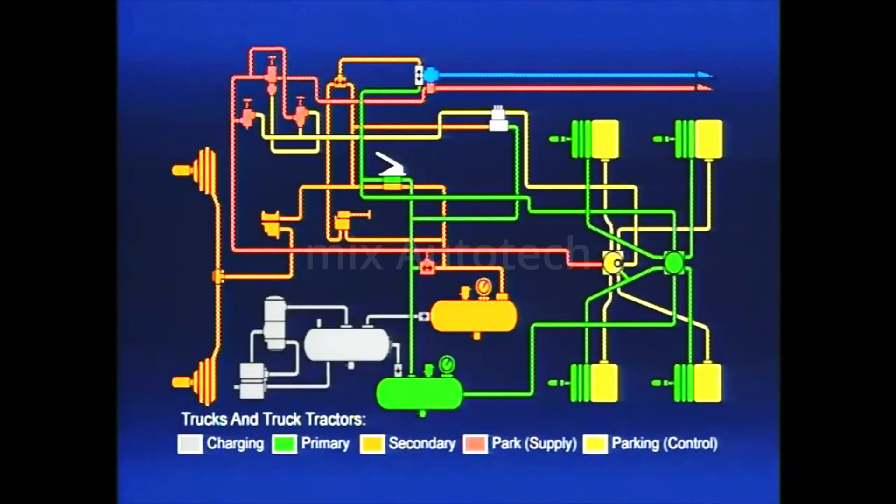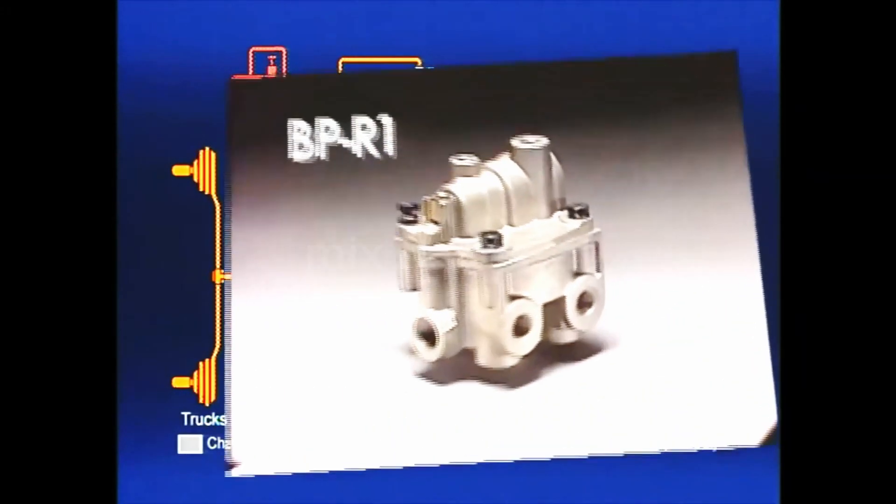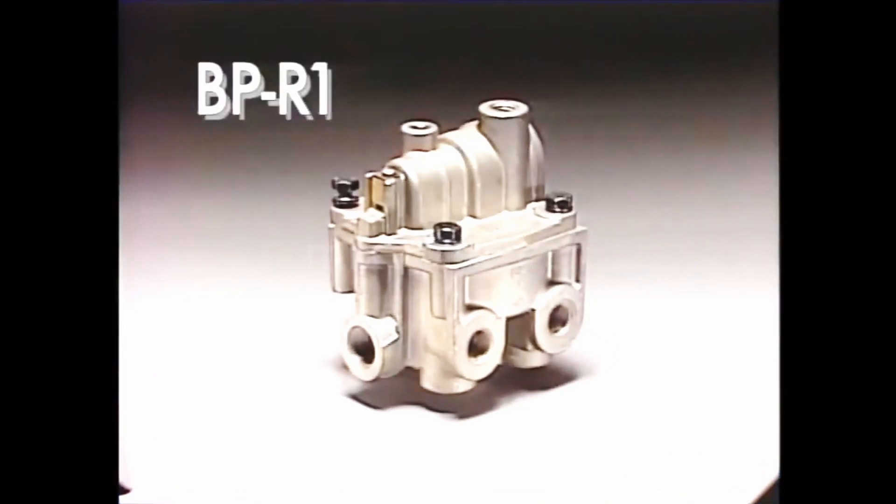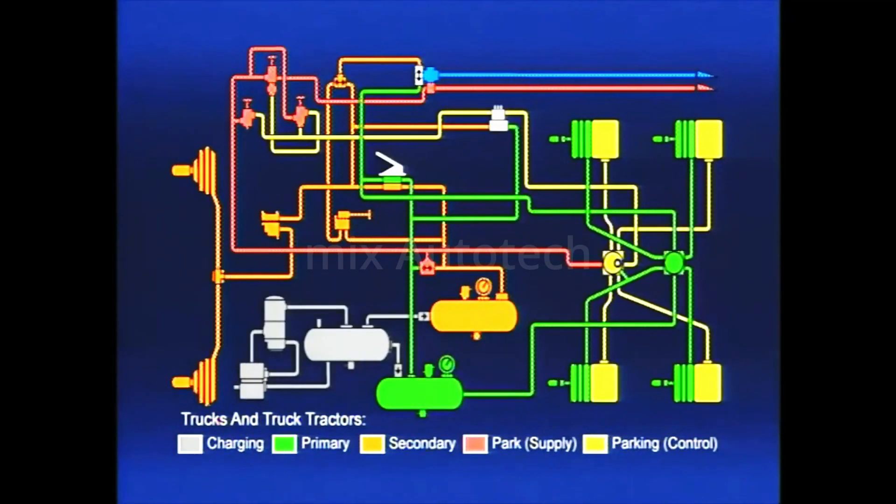Before going on to the trailer brake system, there is one accessory that should be considered. The BPR-1 Bobtail Proportioning Relay Valve. The BPR-1 combines a relay valve with a proportioning valve. It was designed for use in tractor brake systems only and replaces the standard R-12 service relay presented in Part 2.